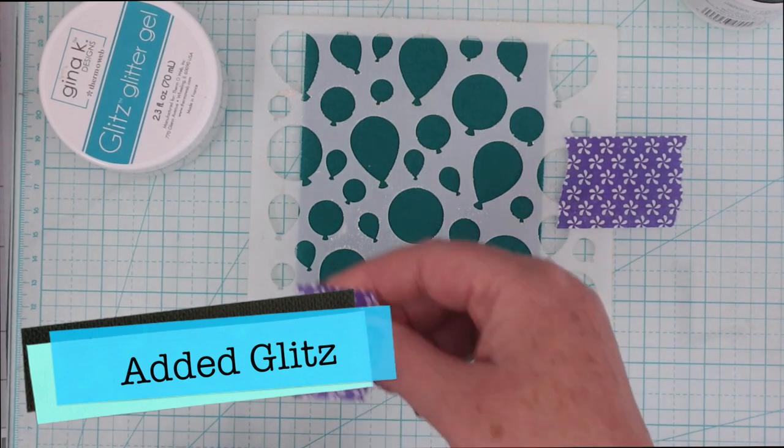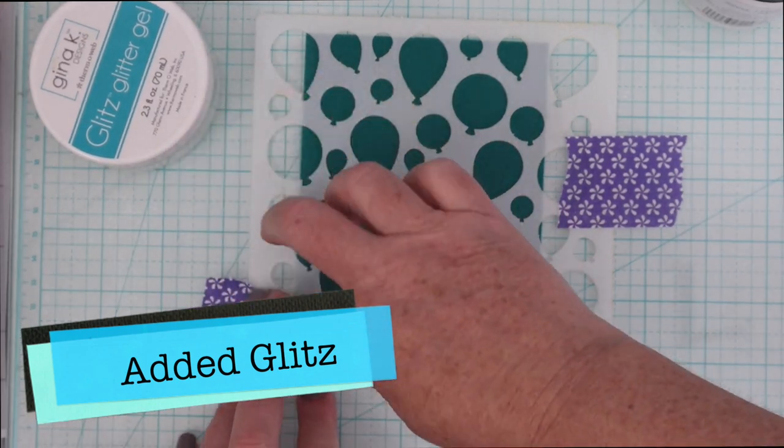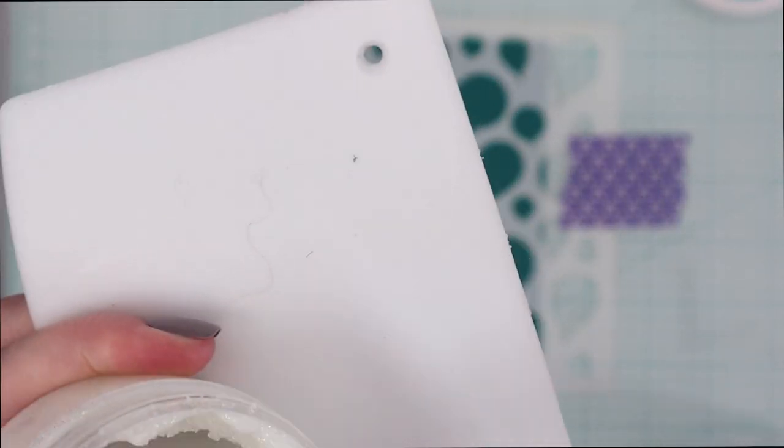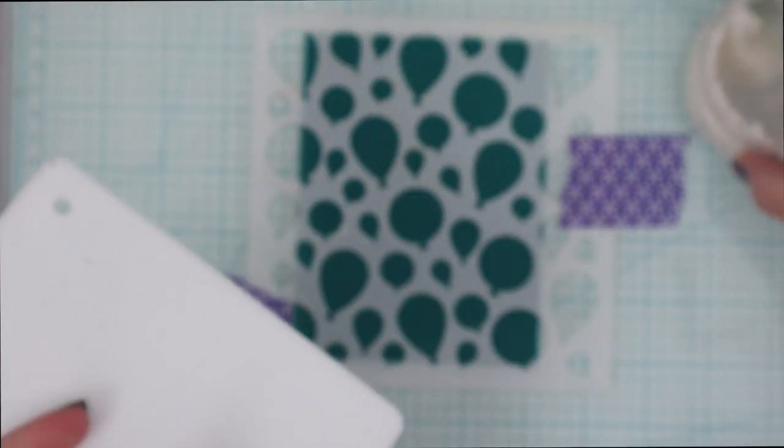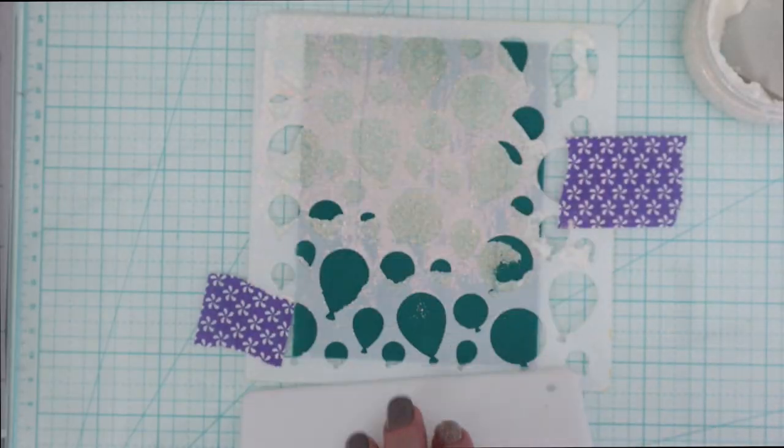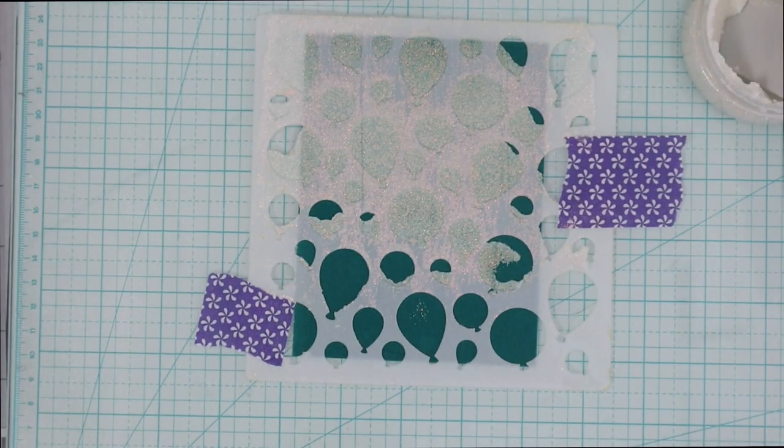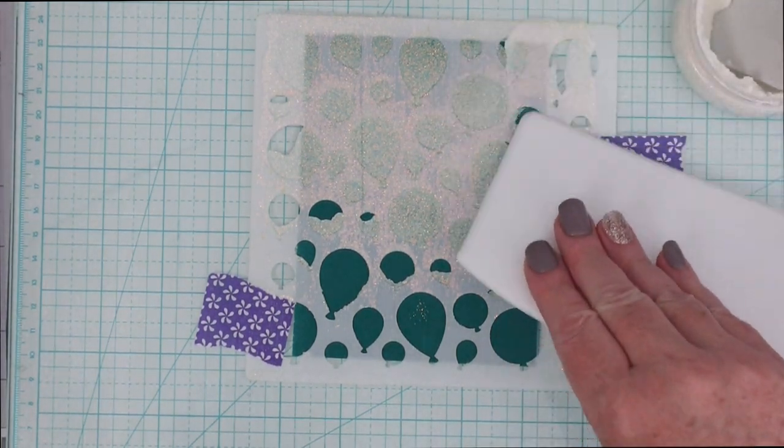These Flock transfer sheets are so awesome because you can actually add things on top of them like ThermaWeb's Glitter Glitz Gels. Again I'm using the purple tape with the stencil because I don't want any pixie spray on the Flock itself but I do want some glitter glitz gel to go over that Newton's Nook Balloon Stencil. So I'm going to put some on my Stencil Pal and then gently just transfer it over the stencil.